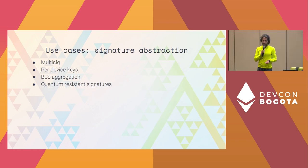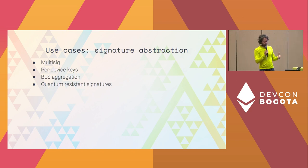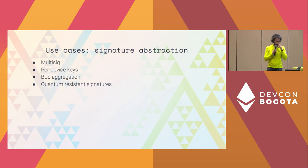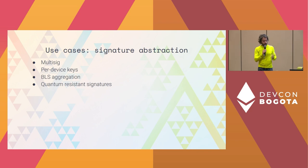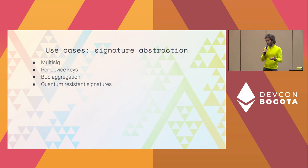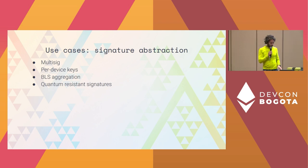Multi-sig is a very obvious use case — you'd be able to get that out of the box. Another one is BLS aggregation, which requires some explanation. BLS is a mechanism to aggregate signatures, and that reduces your gas costs. Because we have the ability to implement any signature verification mechanism in the account, we can have more efficient signature validation and save costs.